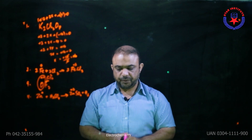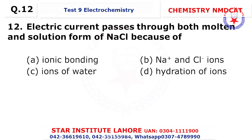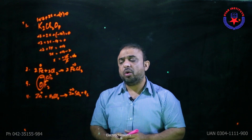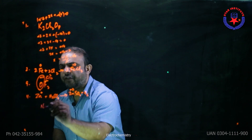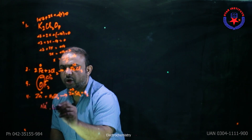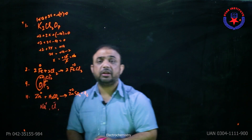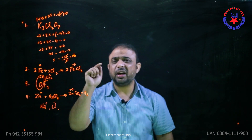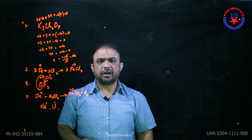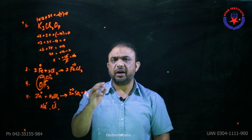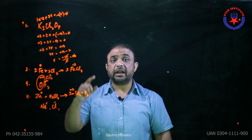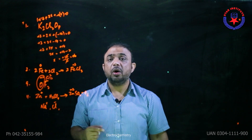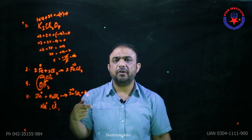Question number 12: electrical current passes through a solution — the current only passes through the movement of ions. For sodium and chloride ions, remember that in case of solution, liquid, gas, or molten state, conduction happens due to the movement of ions. And in case of solids, how conduction happens — only due to the availability of free electrons.